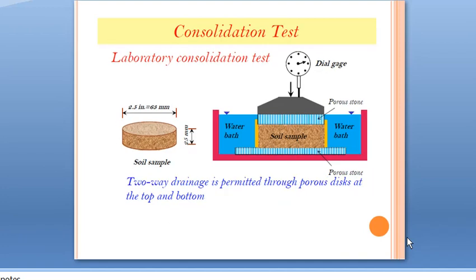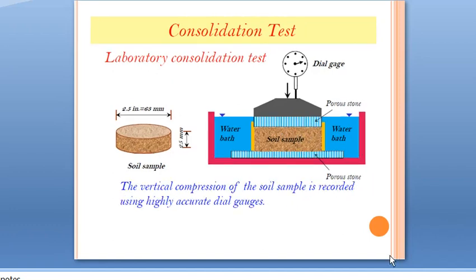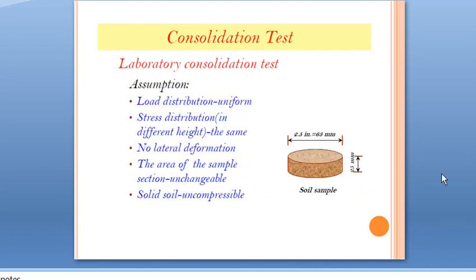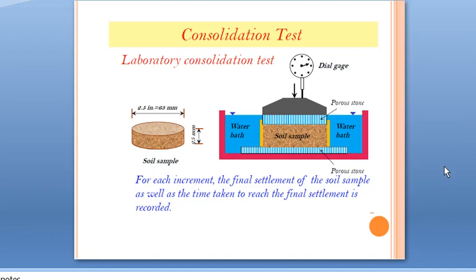Two-way drainage is permitted through porous disks at the top and bottom. The vertical compression of the soil sample is recorded using highly accurate dial gauges. For each load increment, the final settlement of the soil sample as well as the time taken to reach final settlement is recorded. The load is applied and dial gauge readings are noted; then the load is doubled for the next experiment.